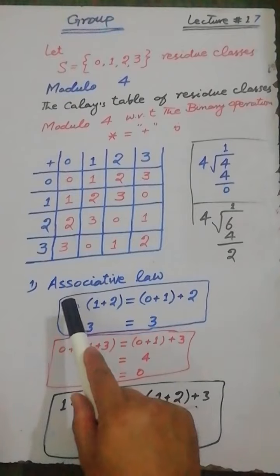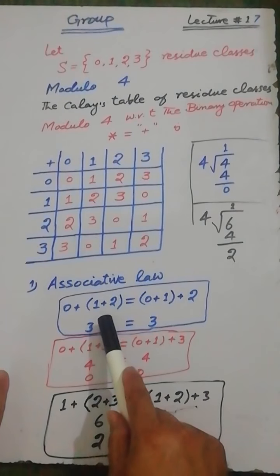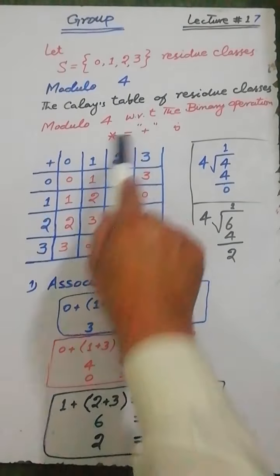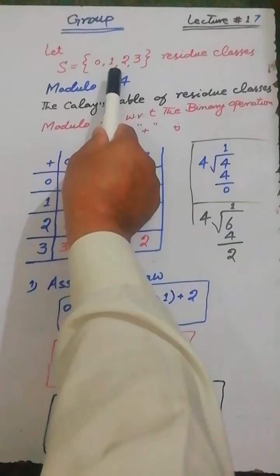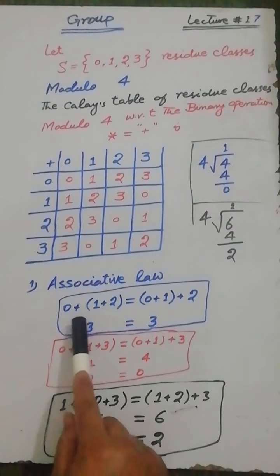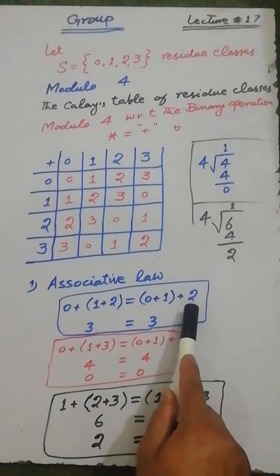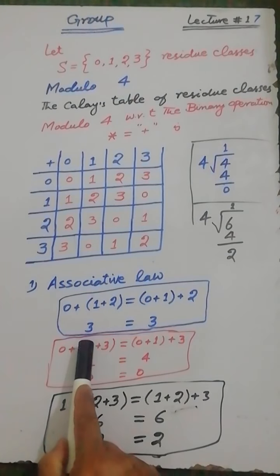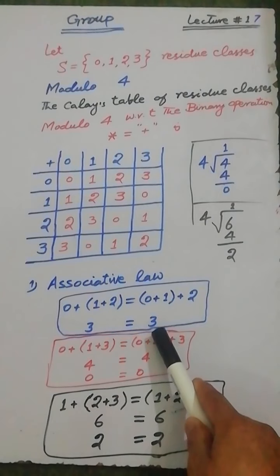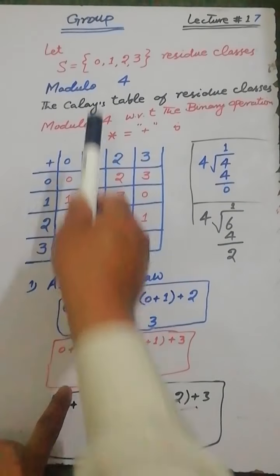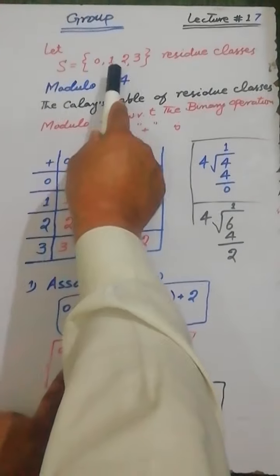Now, to check the associative law with respect to residue classes modulo 4 with the binary operator addition: select elements 0, 1, 2. We have (0+1)+2 = 0+(1+2), and the result on both the left-hand side and right-hand side is equal to 3, which is less than 4. Therefore, the equality holds for these three elements. Select the next three elements: 0, 1, and 3.